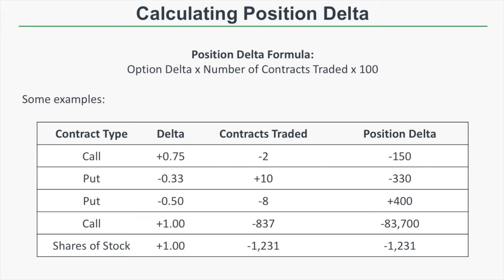Now let's look at a put option with a delta of negative 0.5. Let's say we sell eight of those put contracts — in that case, our position delta will be plus 400. As the stock price increases by $1, we're expected to gain $400, and when the stock price decreases by $1, we're expected to lose $400. That's because we sold a put option, and put options decrease in value when the stock price increases. So for each $1 increase, that put contract is expected to lose $0.50, representing a $50 profit per contract. Since we sold eight contracts, we're making $50 times 8, which is $400 per $1 increase in the stock price.